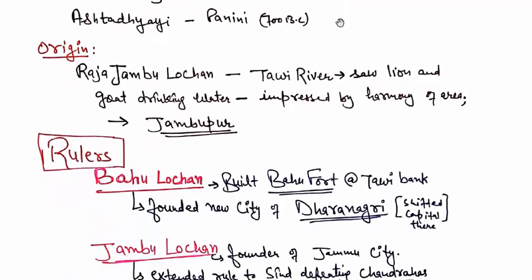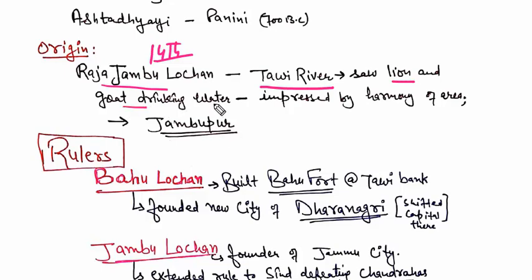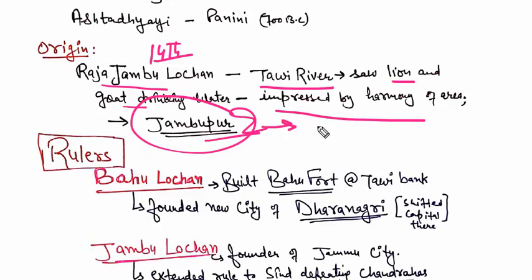Next, let's talk about the origin. According to the most popular legends, Raja Jambu Lochan founded the Jammu city in the 14th century. Once when he was going on hunting near the Tawi River, he saw a lion and a goat drinking water together. After drinking water, they both went their separate ways. This event surprised him and he was impressed by the harmony of the area. So he founded Jambupur town there, which further came to be known as Jammu.